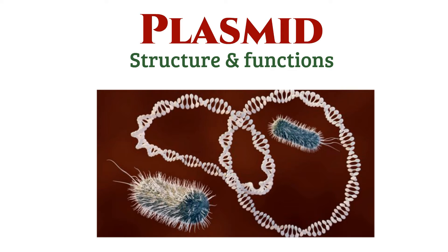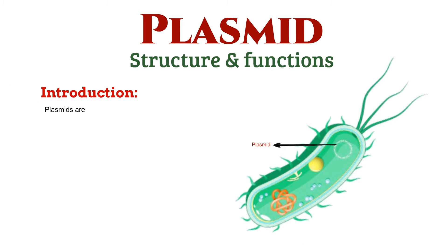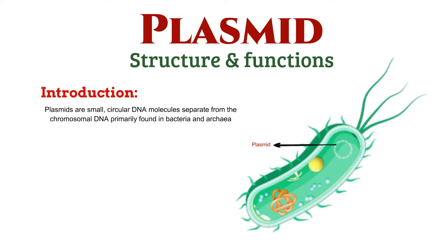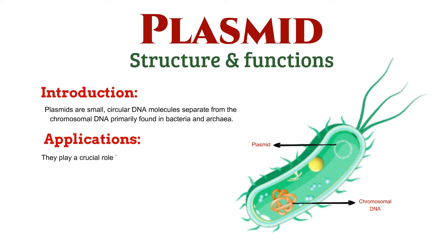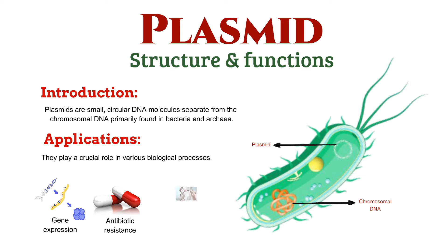Let's start with the basics. Plasmids are small, circular DNA molecules separate from the chromosomal DNA. They play a crucial role in various biological processes, including gene expression, antibiotic resistance, and genetic engineering.